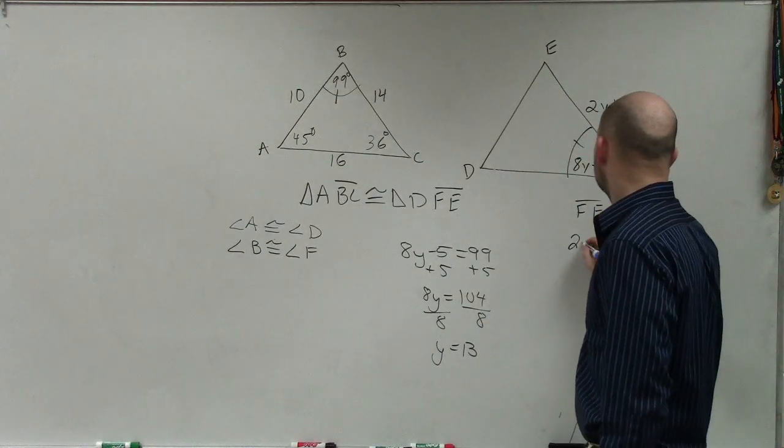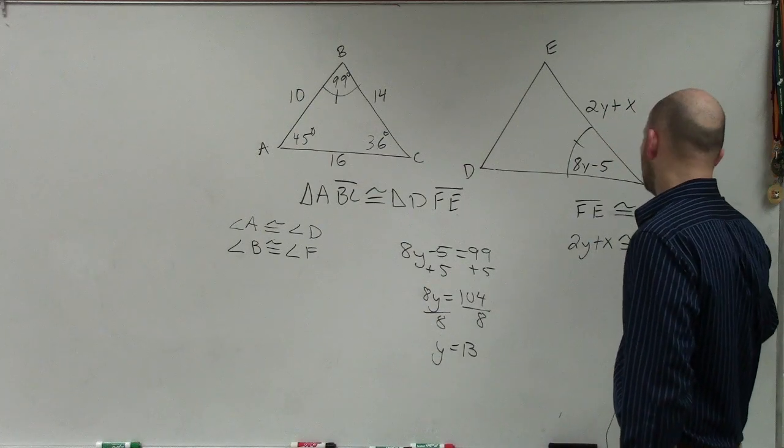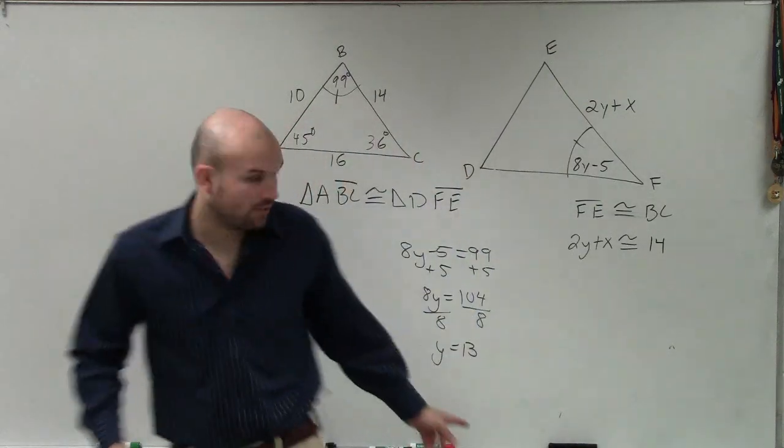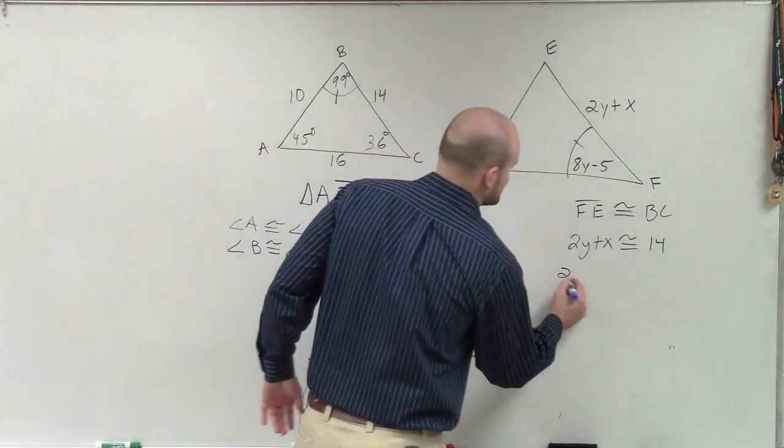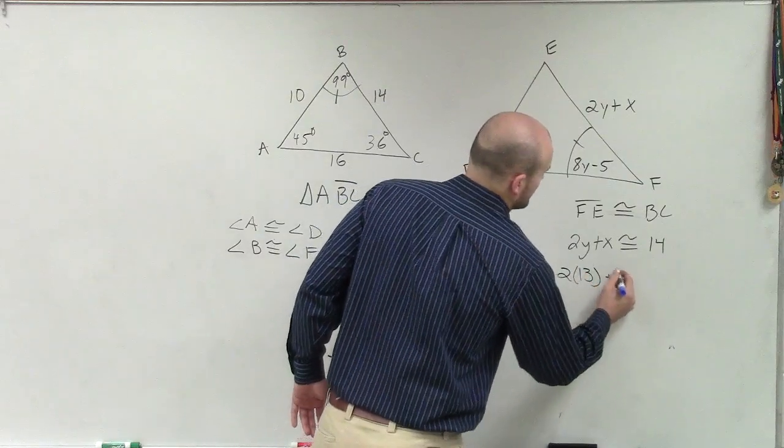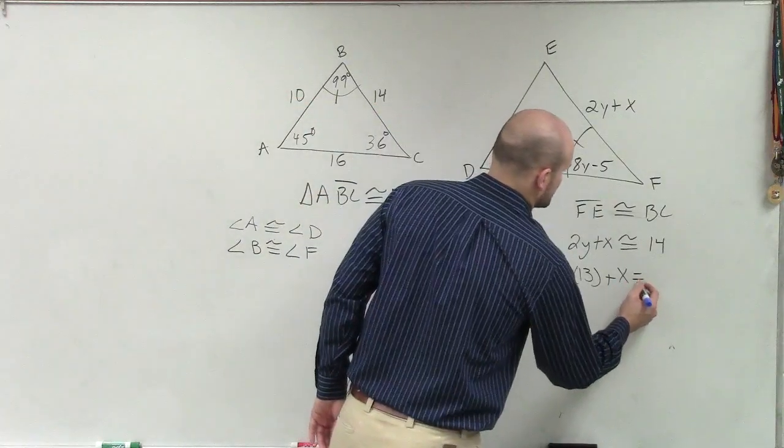FE is congruent to BC. So therefore, I can say 2Y plus X is congruent to 14. Now, we know what Y is, though, correct? So we got Y. So I can now say 2 times 13 plus X. Well, 2 times 13 is going to equals this.